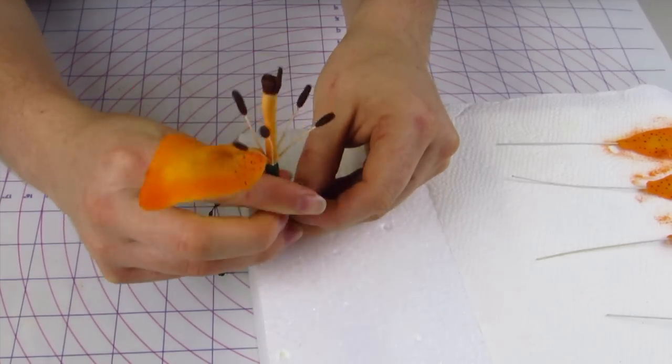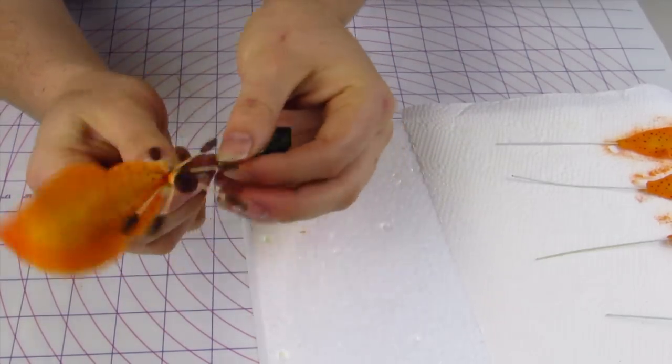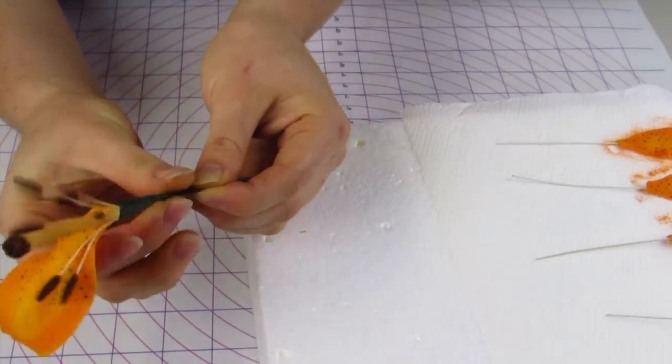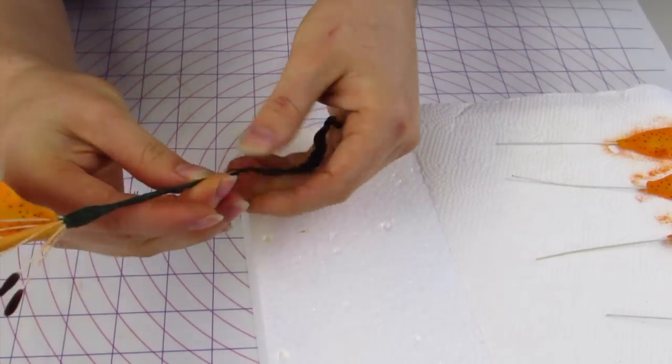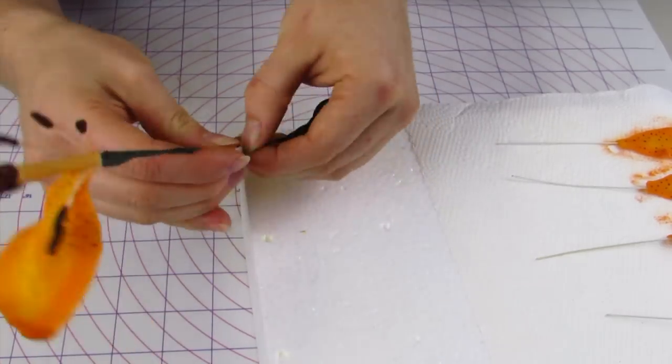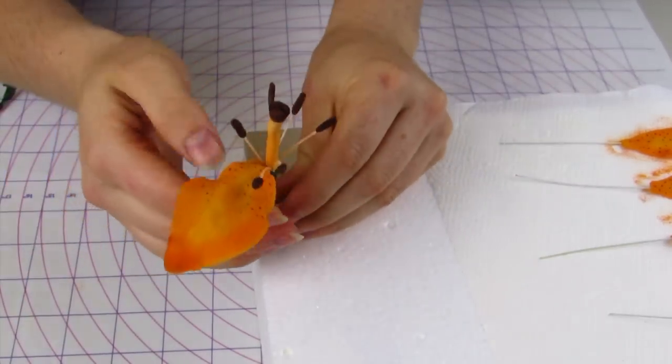Now you're ready to assemble your whole flower. So just like you added your stamens to your pistil, you're going to do the same thing with your petals. So just add petals one by one and pinch your floral tape very, very tightly. And you're just really going to roll it down the whole wire. And that's going to glue everything together.